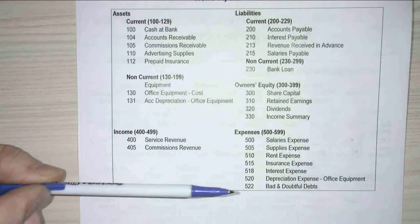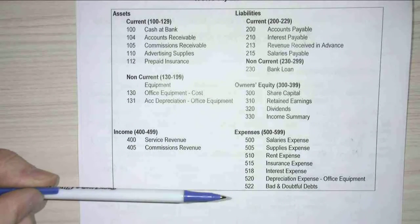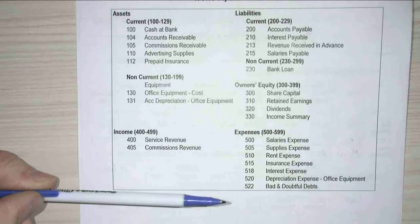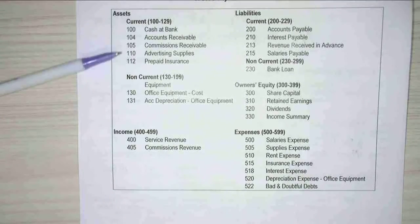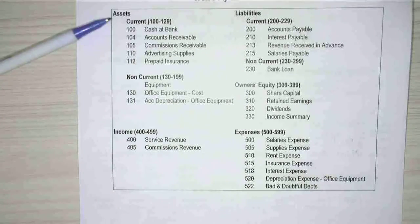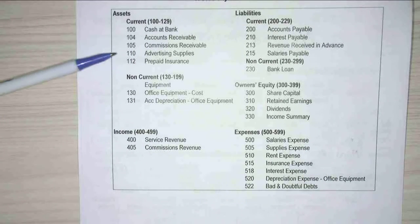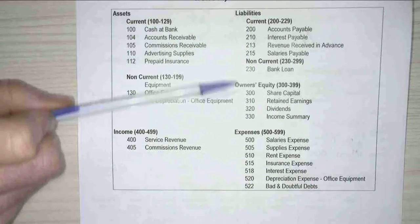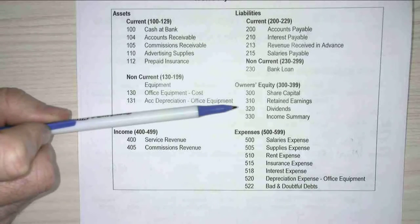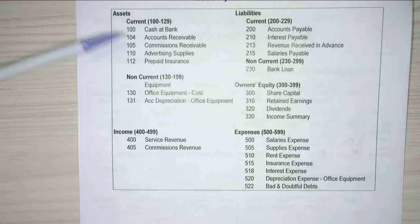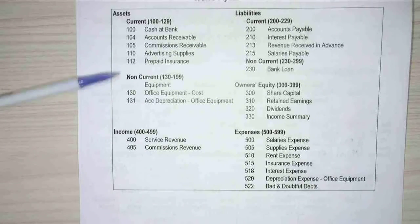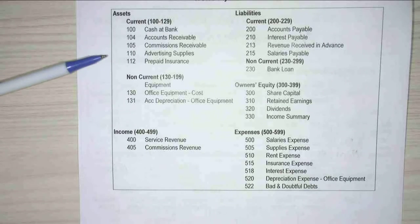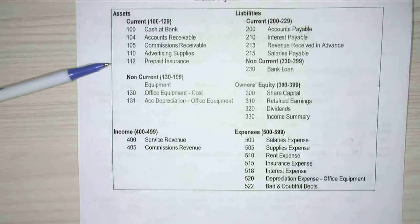Now in general, every chart of accounts works the same way. It might be that the assets are in the 1,000s and the liabilities are 2,000s, equity is 3,000s. But generally the numbering system works the same way. And for your assignment, you're going to have to build a chart of accounts.